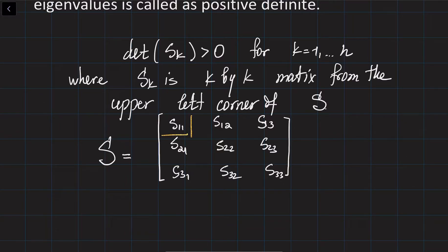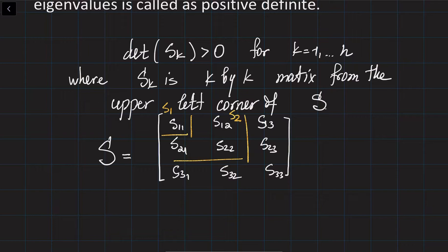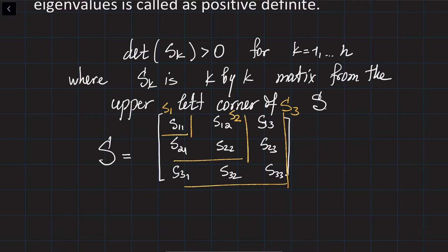S1 is the 1 by 1 matrix from the top left corner. S2 is the 2 by 2 matrix from the top left corner. And S3 is the 3 by 3 matrix from the top left corner. If the determinants of these three matrices are positive, then all eigenvalues of the matrix are positive.